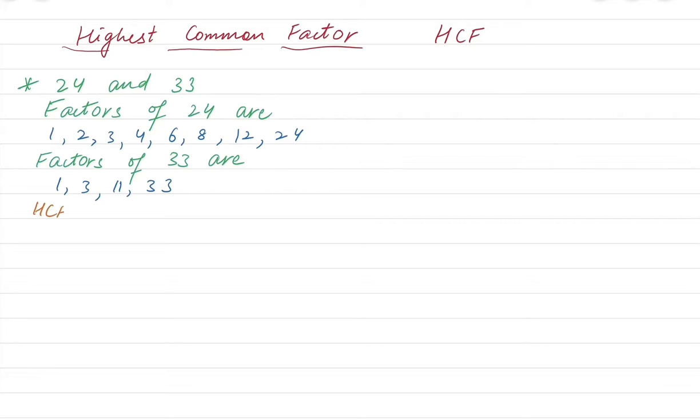So the highest common factor between these two is 3. There is 1 as well but 3 is the highest. So HCF equals 3 of 24 and 33.